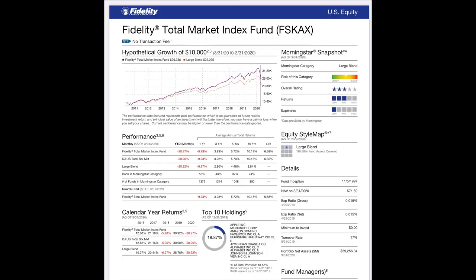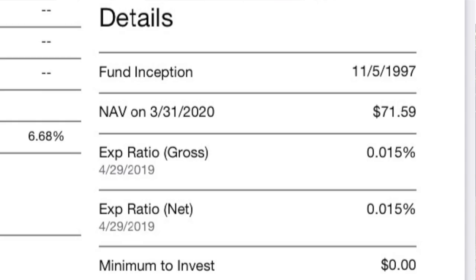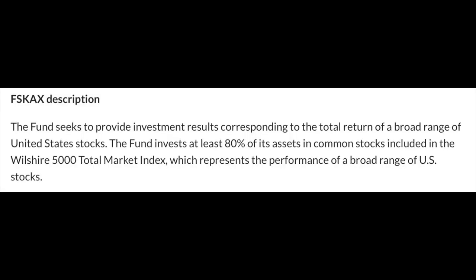Let's first talk about FSKAX, the Fidelity Total Market Index Fund. It has a very low expense ratio of 0.015%, or 1.5 basis points. That means you're paying a dollar fifty on ten thousand dollars of invested money — very inexpensive. FSKAX seeks to provide results corresponding to the broad range of United States stocks. The fund invests at least 80% of its assets in common stocks in the Wilshire 5000 Total Stock Market Index, which represents a broad range of US stocks.